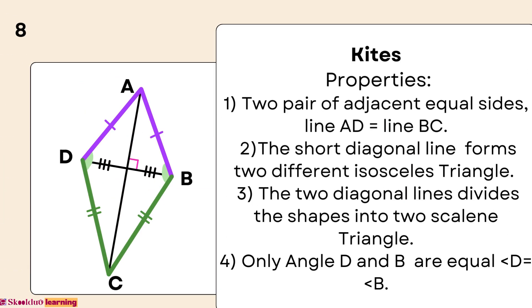Kite Properties. One: Two pairs of adjacent equal sides — line AD equals line BC. Two: The short diagonal forms two different isosceles triangles. Three: The two diagonal lines divide the shape into two scalene triangles. Four: Only angles D and B are equal — D equals B.